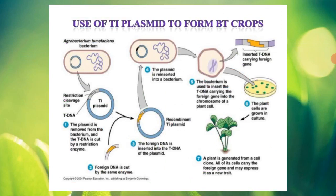Using recombinant DNA technology, we insert the foreign DNA — the cry gene from Bacillus — into the Ti plasmid. You can imagine it like joining a puzzle. We now have the recombinant Ti plasmid. Then we again insert this recombinant Ti plasmid into Agrobacterium tumefaciens. This is an important step — we must re-insert the plasmid back into the bacterium so that the mechanism will work.